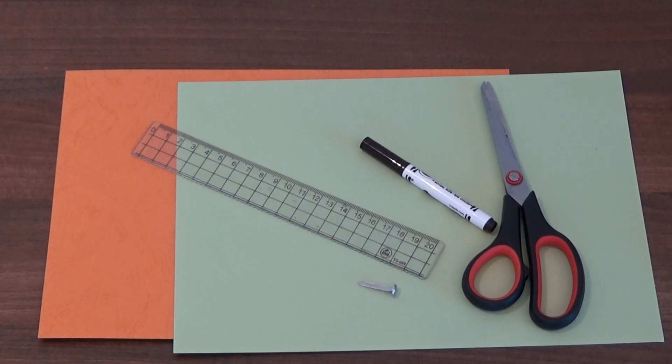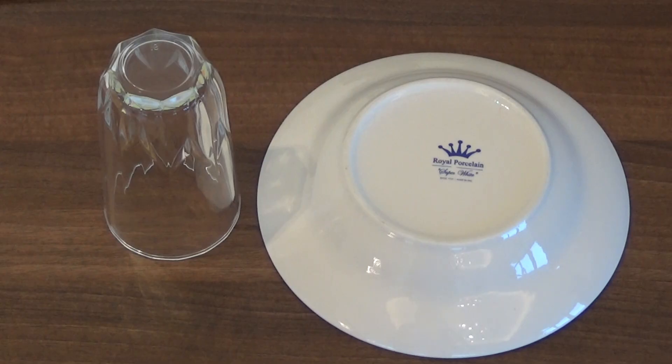All you need for this is some paper or cards, scissors, a split pin, a ruler and a pen. You will also need something to draw around such as a bowl and a glass.